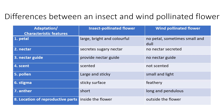Regarding the production of nectar: nectar is produced to lure insects, providing food in exchange for helping with pollination. This is true for the insect-pollinated flower, while the wind-pollinated flower does not produce nectar. The scent that nectar emits means the insect-pollinated flower is scented, while the wind-pollinated flower is not scented.